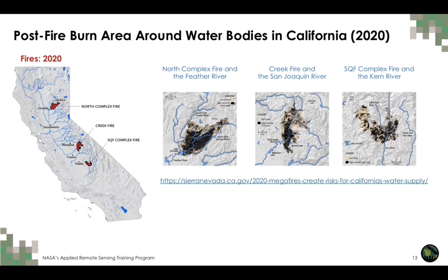As we saw in Session 1, in 2020 there were more than 8,000 fire events in California burning close to 1.4 million acres. Three major fire areas are shown on the map: the North Complex Fire in the Feather River watershed, Creek Fire in the San Joaquin River watershed, and the SQF or Sequoia Complex Fire in the Kern River watershed. For this water quality case study, we focus on the North Complex Fire in the Feather River watershed.